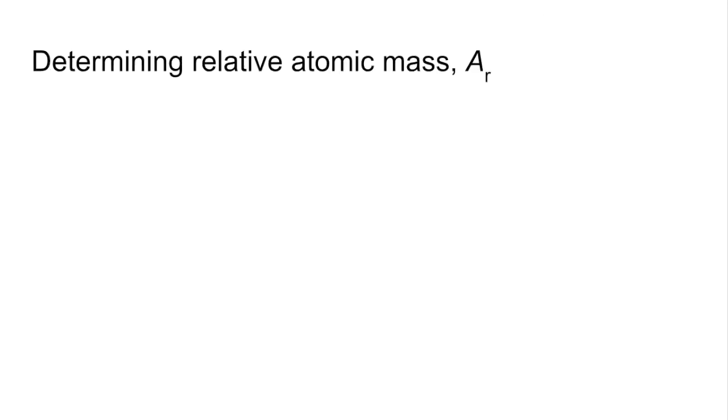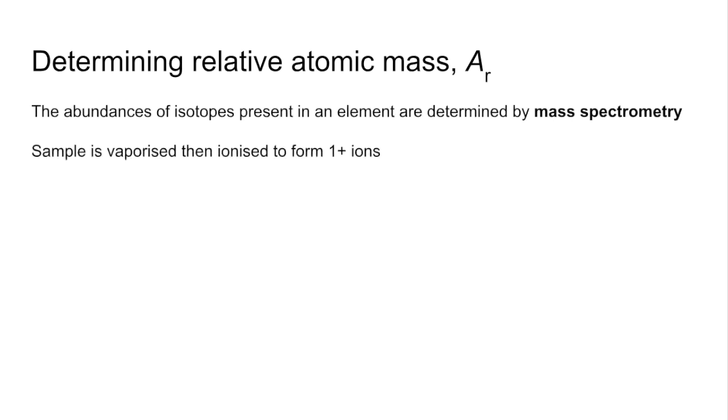So quickly, how do they determine relative atomic mass? So they do it by something called mass spectrometry. So I'll quickly run through the steps on this. So the sample needs to be vaporized and then it's ionized to form one plus ions. Once it's got the charge on, it can be accelerated through the spectrometer.